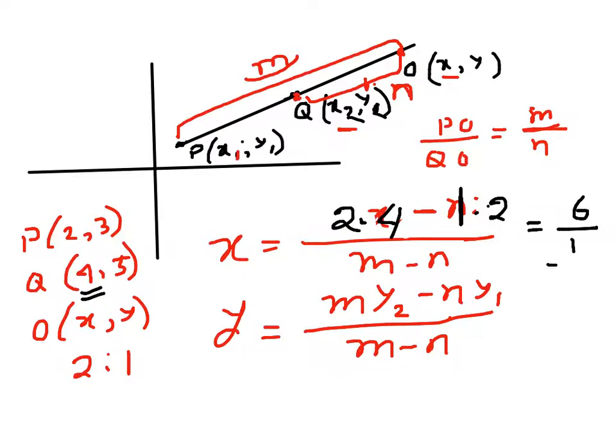For the second one, M again is 2, y2 is 5, 2 times 5, N is 1, y1 is 3, and 2 minus 1. So that's 10 minus 3 is 7 over 1, so that is 7.